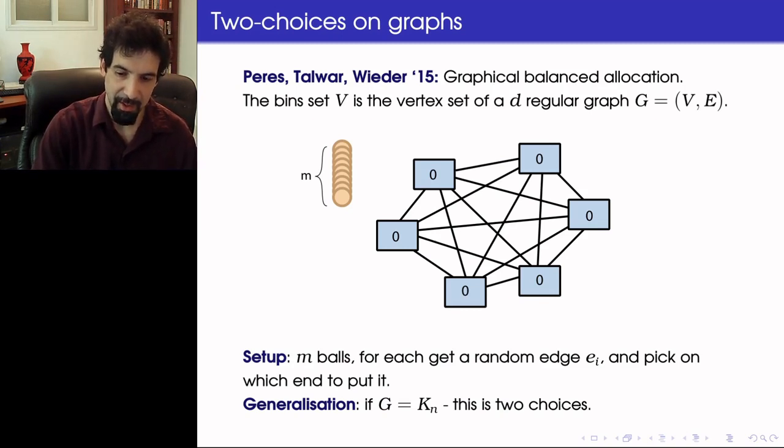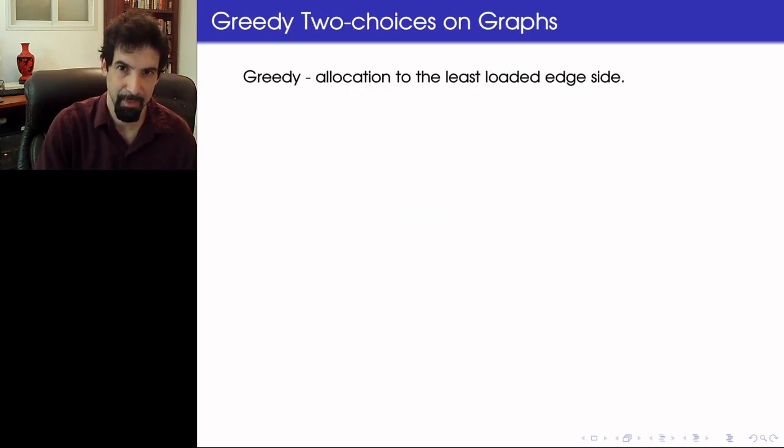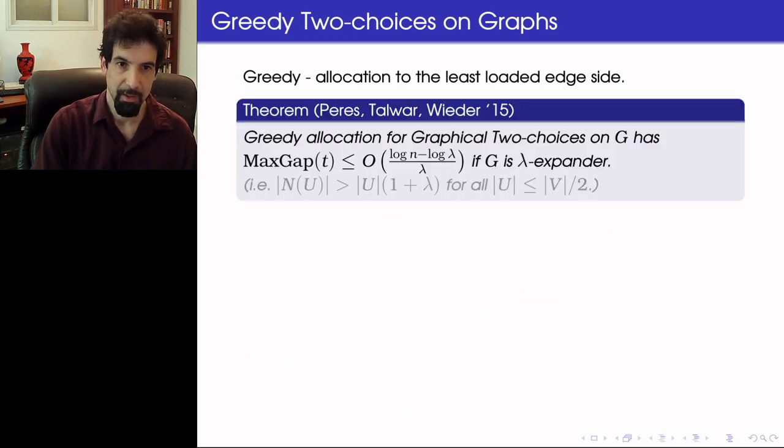And the question is, how does this restriction into fewer possible choices between two members affect the maximum gap? So what Peres, Talwar and Wieder show is that greedy allocation under graphical two choices on a graph which is an expander is relatively yielding low maximum gap. So what they showed is that the maximum gap is at most log n minus log λ over λ if G is λ-expanding.